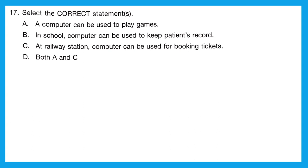Question 17: select the correct statement or statements. A — a computer can be used to play games, that's correct. B — in school, computers can be used to keep patients' records — no, patients are in hospitals, not schools. C — at railway stations, computers can be used for booking tickets, that's correct. So A and C are both correct, and the answer is option D, both A and C.